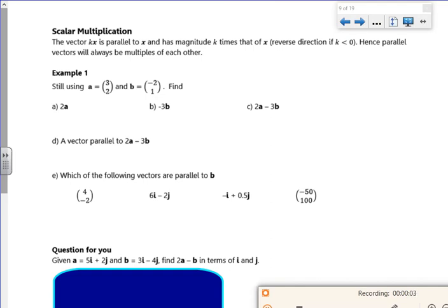Right then, so we can make the vectors bigger. So it says a vector kx is parallel to x and has a magnitude k.